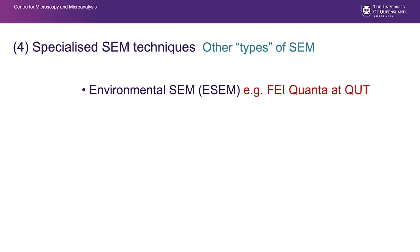First on the list is environmental SEM, or ESEM. We don't have one of those here, but they are interesting in that they were developed to allow CSIRO researchers to look at wet sheep's wool. They allow a poor vacuum into the chamber and use the electron beam to ionize those atoms, producing positive ions and electrons. The positive ions are attracted towards electrons building up on the sample surface and can be used to dissipate charge, allowing operation at quite high pressures to image insulating and difficult samples.